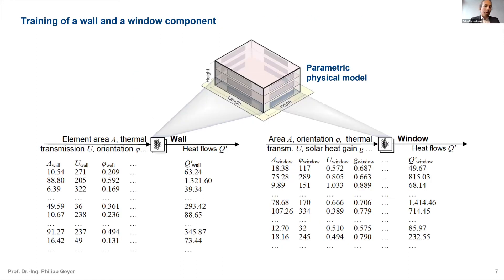How do we develop such a data model? I'll illustrate using the window and wall component. We get training data from physical models — either simulation or real building data. We select data for one component, for example the wall. The input data is wall size, thermal transmission of the wall, and wall orientation; the output is the heat flow for that wall. We select a regression model and train component models one by one — wall, window, roof, floor.